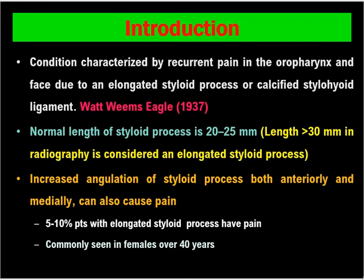Eagle Syndrome is a condition characterized by recurrent pain in the oropharynx and face due to an elongated styloid process or calcified stylohyoid ligament. This condition was described by Watt Williams Eagle in 1937. The normal length of the styloid process is around 25 mm. Length up to 30 mm does not cause much problem, but when the length is more than 30 mm it is considered an elongated styloid process.